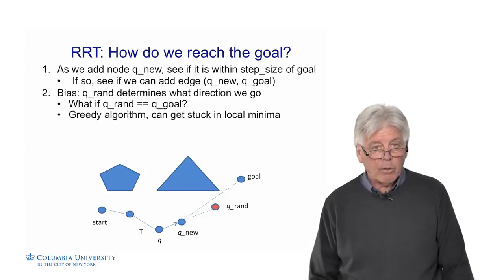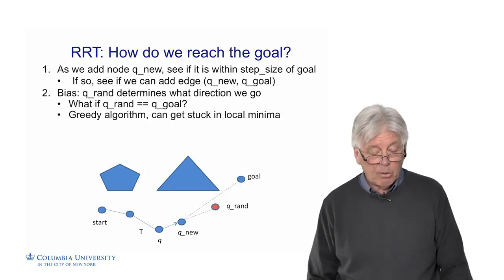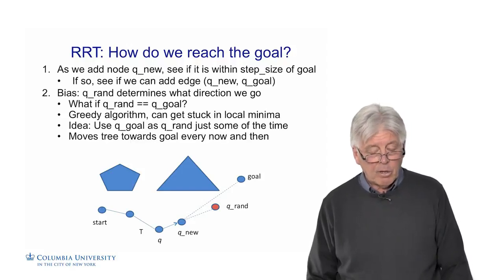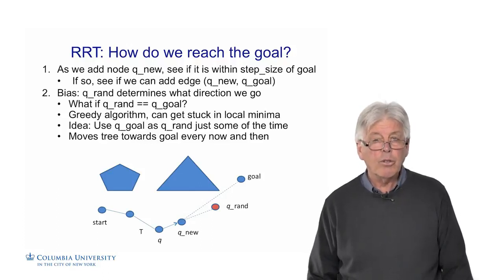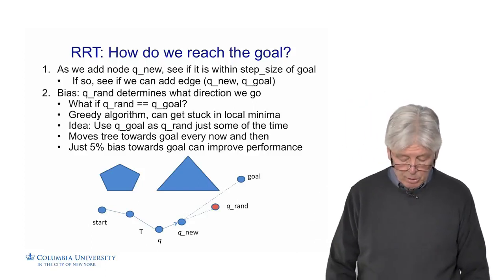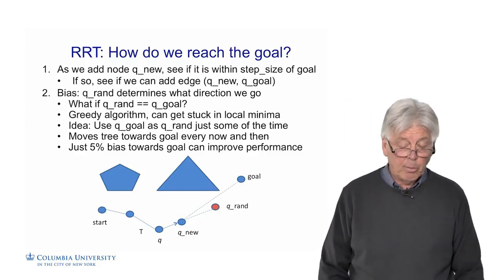It's a greedy algorithm, though, and it can get stuck in local minimum. If you always go to the goal, it's not going to work. But one trick that works pretty well is you can use the goal as QRAN just some of the time. Every now and then, let's get lucky, let's get close to the goal, and use the goal as the place we're shooting for. If you use just a 5% bias towards the goal, you can really improve performance.